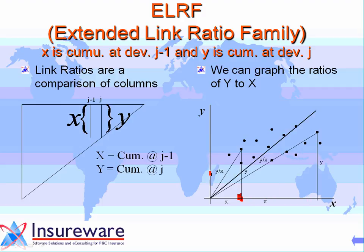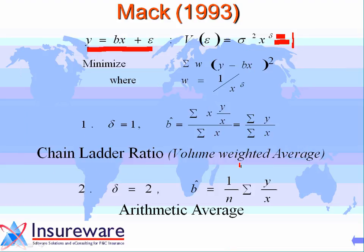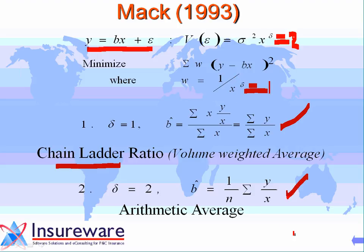Given x, that's the average value of y; given this x, that's the average value of y. The variance of y around the line is proportional to x. Making those two assumptions and using weighted least squares — where the weight is the inverse of the variance, as in credibility analysis — the weighted least squares estimator gives the volume weighted average, or as the Europeans call it, the chain ladder ratio. If you make delta equal to 2, changing the variance assumption and the weight, you get the arithmetic average. So now we can generate these ratios by doing the regression lines.